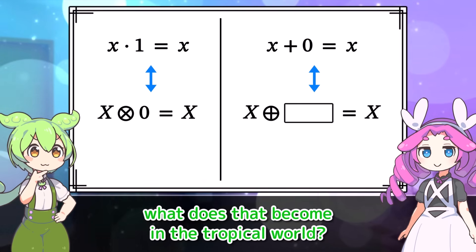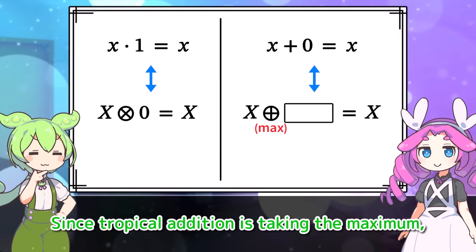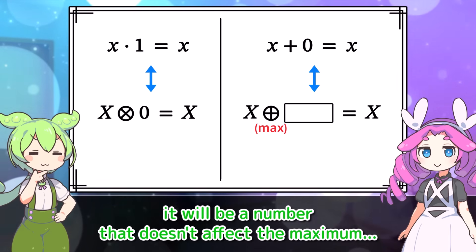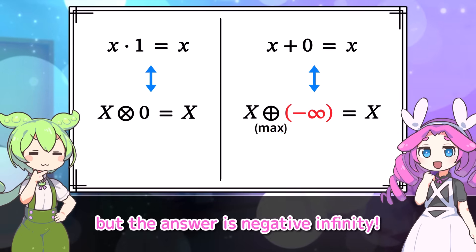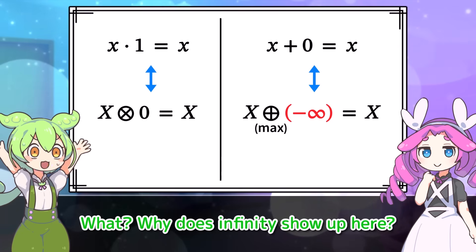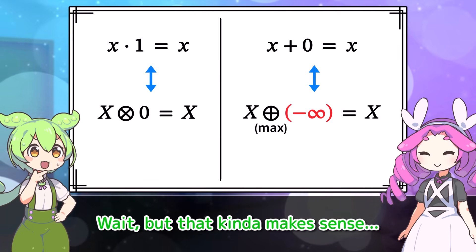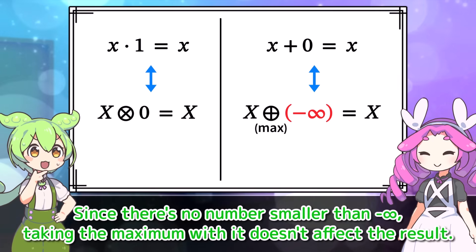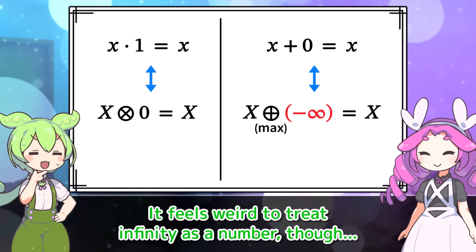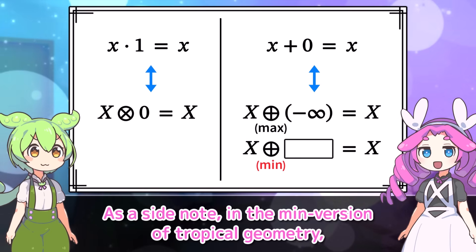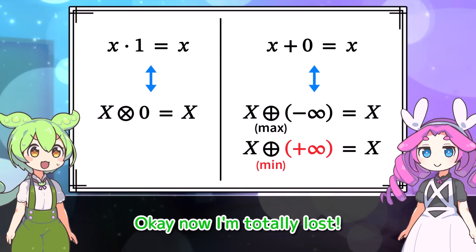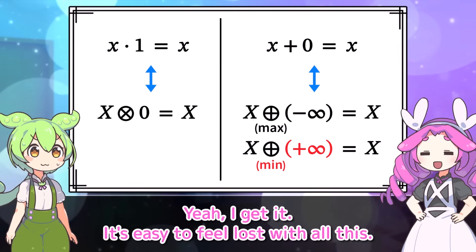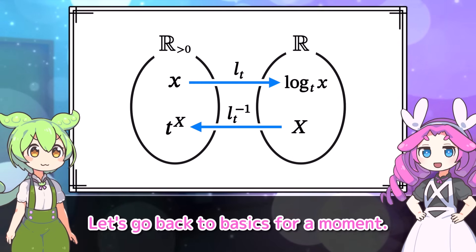Is there even such a number? This might feel a bit like cheating, but the answer is negative infinity. Why does infinity show up here? Since there's no number smaller than negative infinity, taking the maximum with it doesn't affect the result. It feels weird to treat infinity as a number. As a side note, in the minimum version of tropical geometry, adding positive infinity won't change the result. Let's go back to basics for a moment.